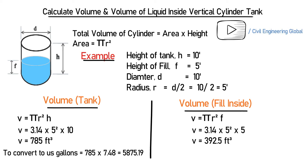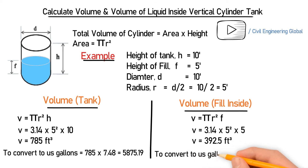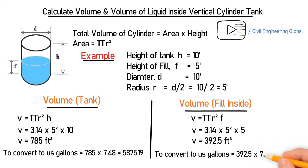Let's convert this into US gallons. As we know, one cubic foot equals 7.48 US gallons. So 392.5 multiplied by 7.48 gives 2937.59 US gallons. This is the volume of liquid filled inside the tank in US gallons.